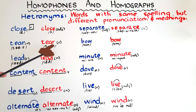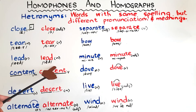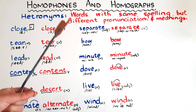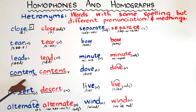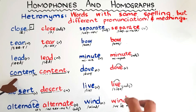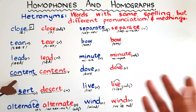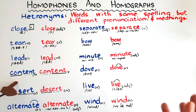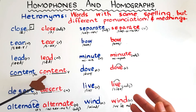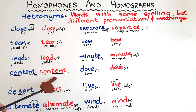The next word is 'lead' — a verb, as in to lead someone — and 'lead', a noun, an element we have in our pencils; the grayish thing we write with is lead. The next word is 'content' — with stress on the first syllable, referring to things inside something, like the content of a book or a YouTube channel — and 'content', with stress on the second syllable, a verb meaning to be satisfied.